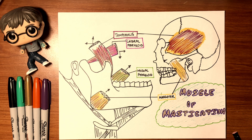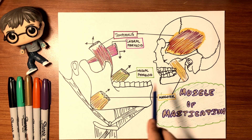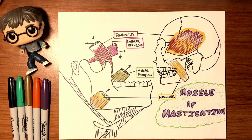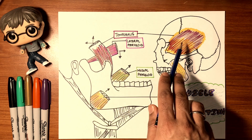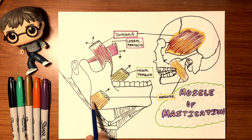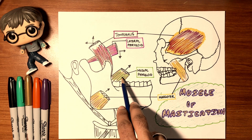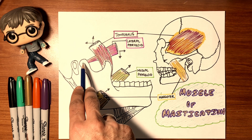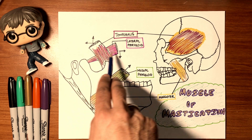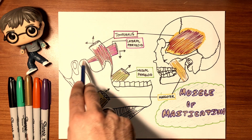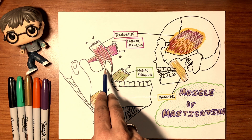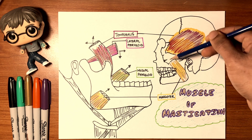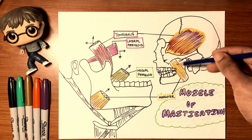Looking at the diagram: the masseter sits on the outside of the mandibular ramus at the angle, the medial pterygoid mirrors it on the inside. The lateral pterygoid attaches posteriorly at the condyle and runs horizontally — it is the only horizontal muscle. The temporalis runs from the coronoid process all the way up the skull. The masseter is quadrangular, on the ramus, and is the strongest elevator of the mandible.